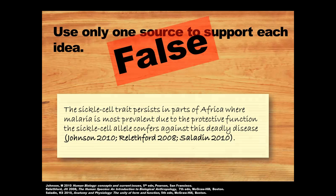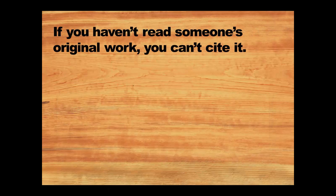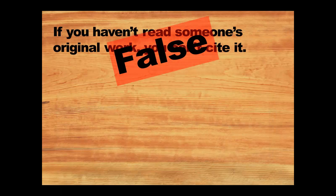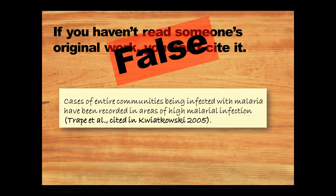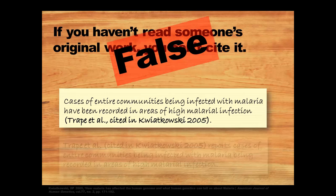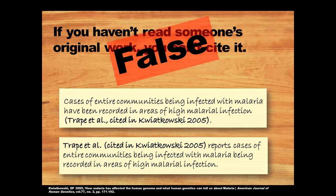A final myth is that if you haven't read someone's original work, you can't cite it. It's always a good idea to read someone's original work where you can, but this is also false. There may be times when you can't get hold of someone's original work, and if this is the case, you can list two names: the name of the originator of the idea, followed by 'cited in,' and then the name and date of the reference that you've looked at.